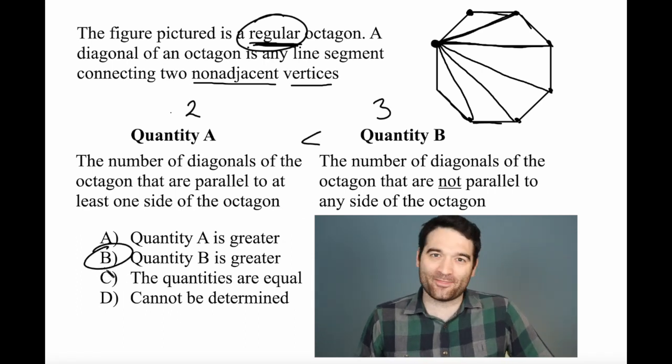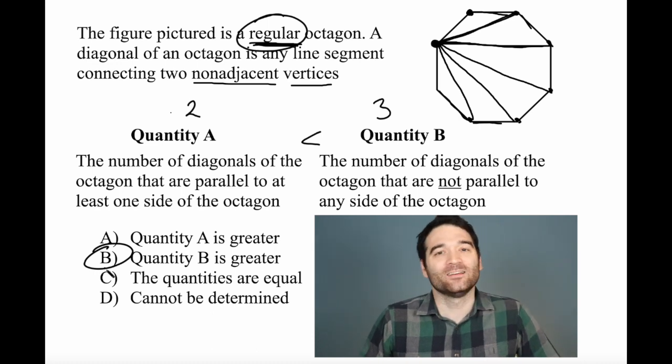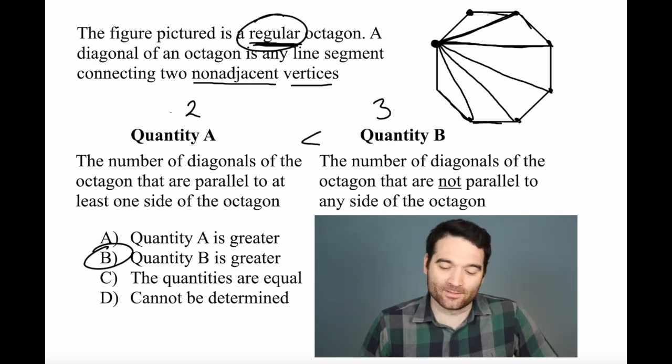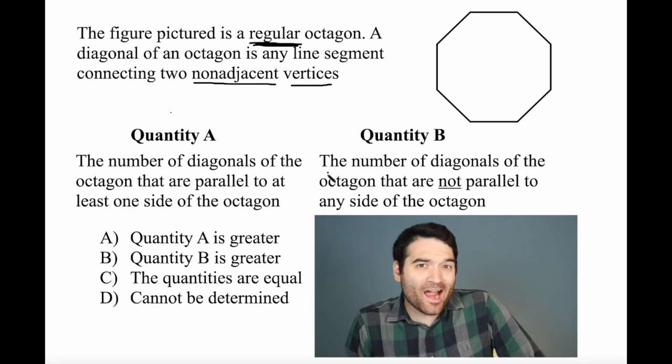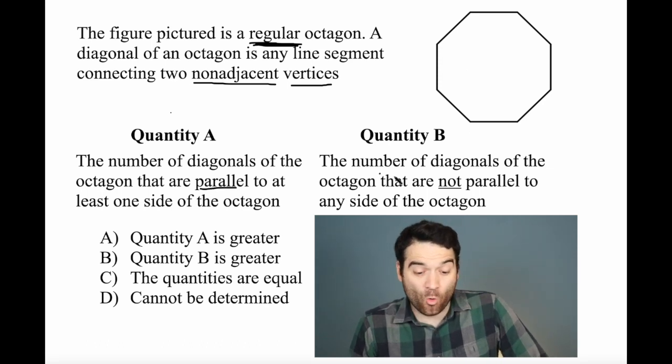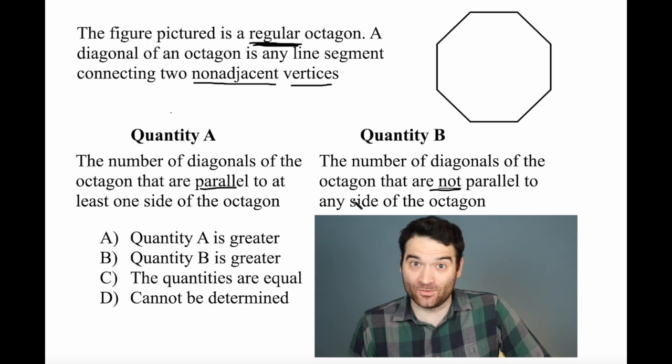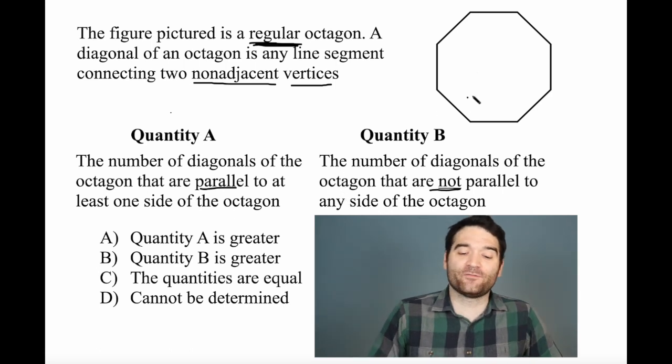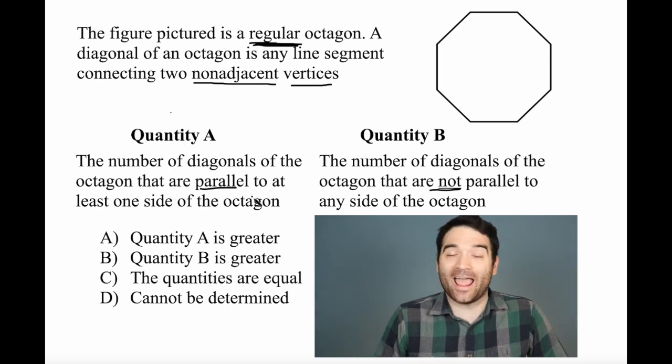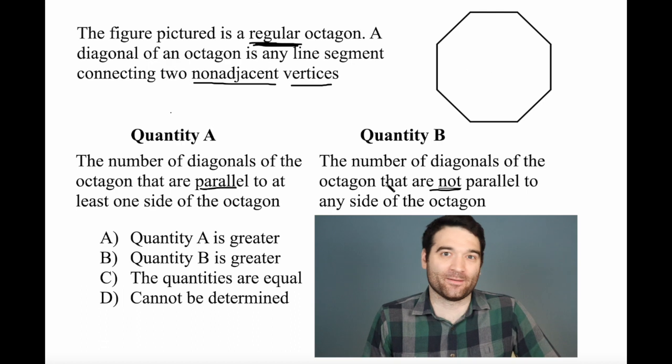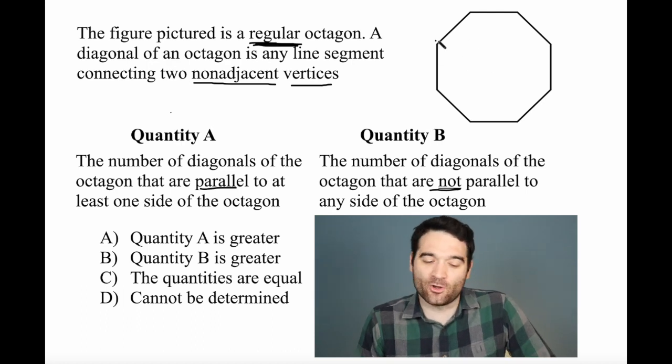But if you're a little more mathematical and want something a little more exact, here's another way to look at it. I'm going to erase this a little bit more here. So here's one important concept. A line is either parallel or it's not. It has to be one of these two. So if I can figure out the entire number of all diagonals in this octagon and then figure out how many of them are parallel, I should be able to compare.